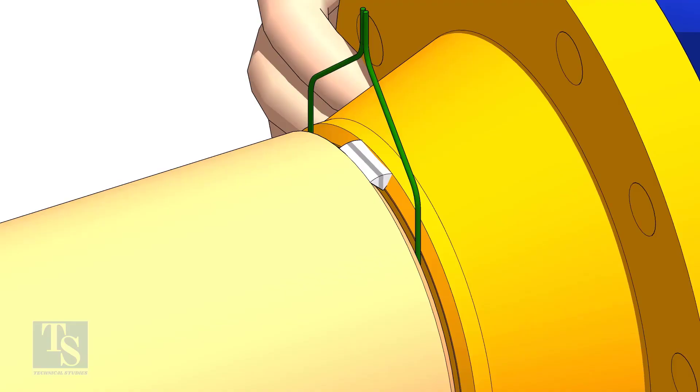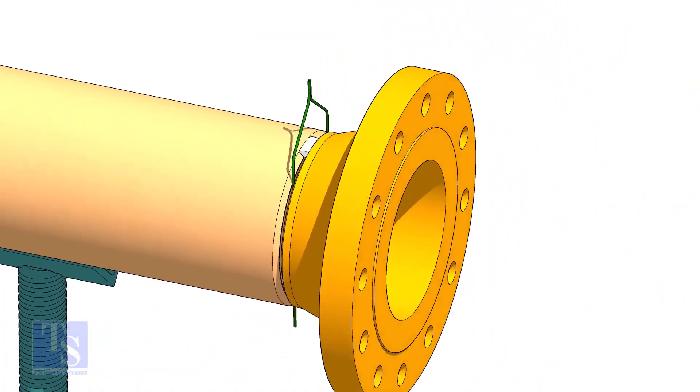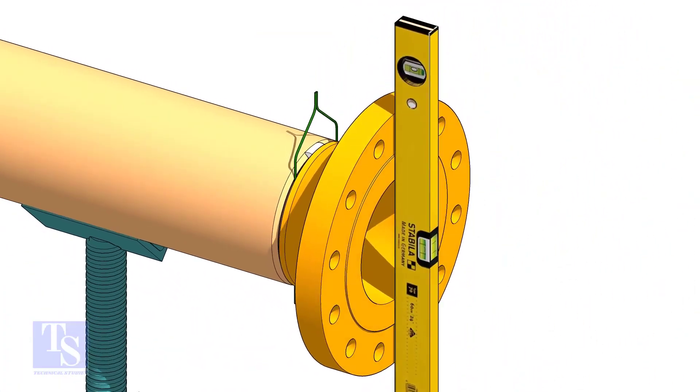Tack weld on the top side of the joint. Check the level of the flange vertically and tack weld on the bottom side of the joint.